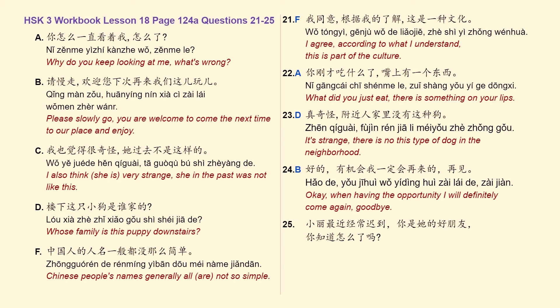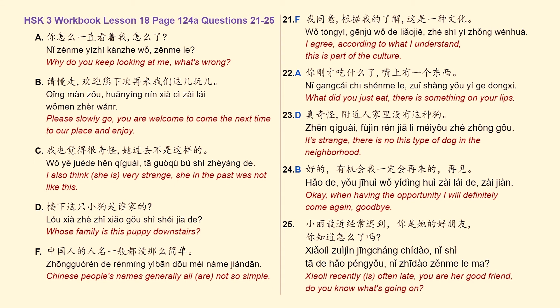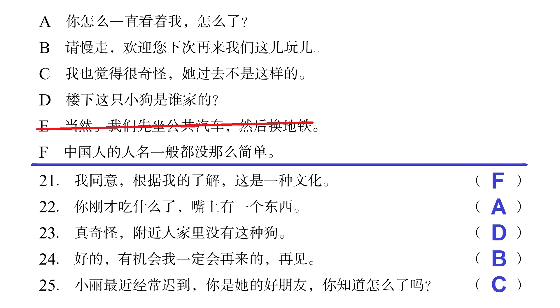Now the last sentence, number 25: 小力最近经常迟到。你是她的好朋友。你知道怎么了吗？ — 小力 recently is often late. You are her good friend. Do you know what's going on? Related to that, the only possibility left and the logical answer is letter C: 我也觉得很奇怪。她过去不是这样的。 — I also think she is very strange. She in the past was not like this. With this, you have the correction for page 124, questions 21 to 25 in the workbook.